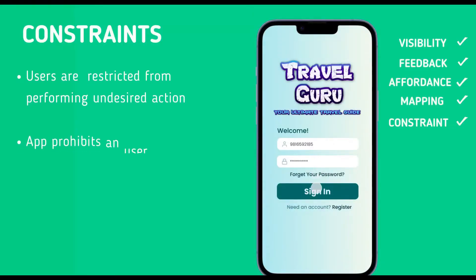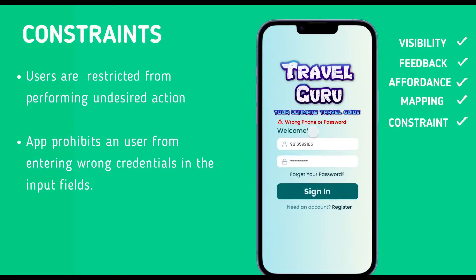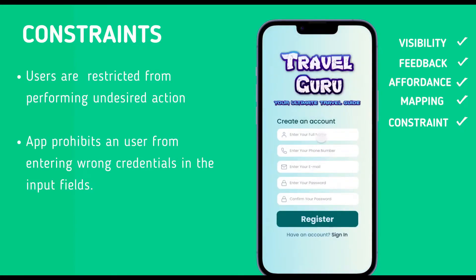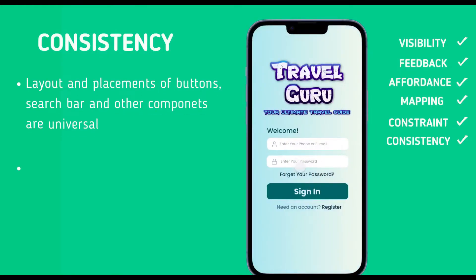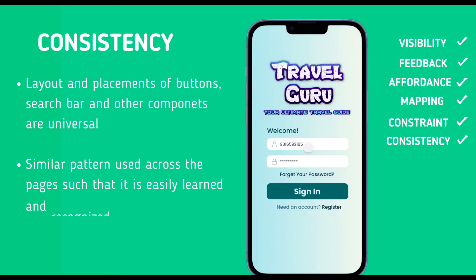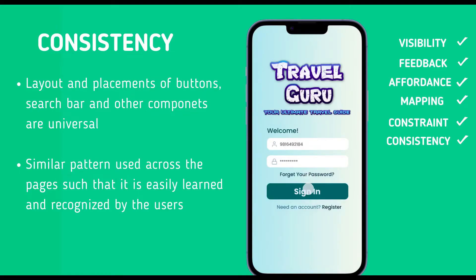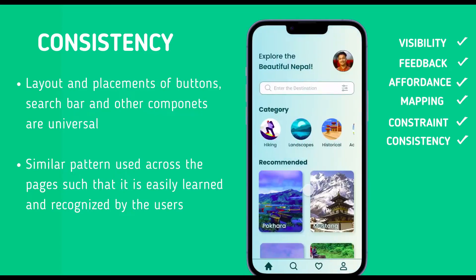Likewise, constraints restrict a particular form of user interaction with the interface. We can clearly see that the app prohibits a user from entering wrong credentials in the input fields. Similarly, consistency is the key for patterns to be learned and recognized by the users. We can clearly see that the layout and placement of buttons, search bar, and other components used are universal. The color and icons are consistent throughout the app.